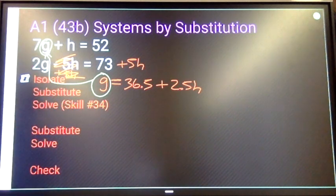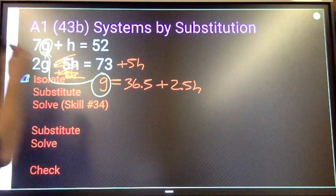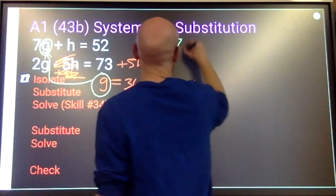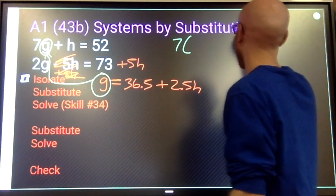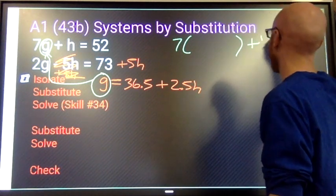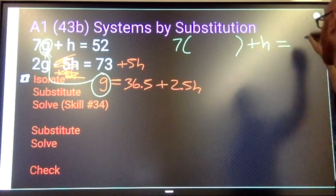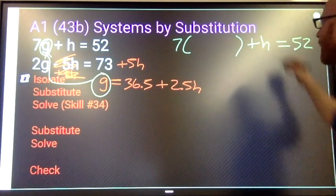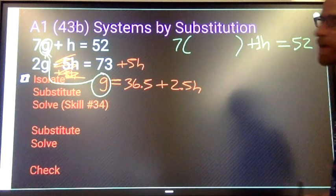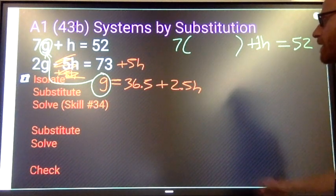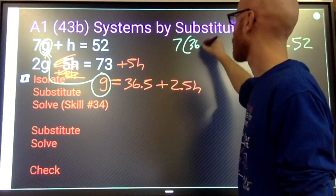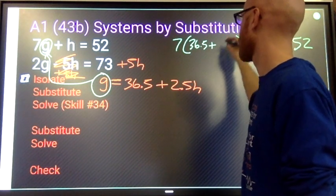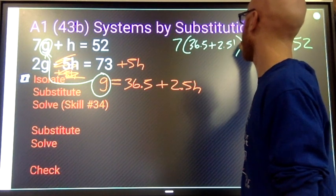I take this, substitute it in here. So I'm going to rewrite my top equation: 7g plus h equals 52. And again, maybe I want to put my 1 in front of my h. At this point, instead of writing g, I'm going to write 36.5 plus 2.5h.